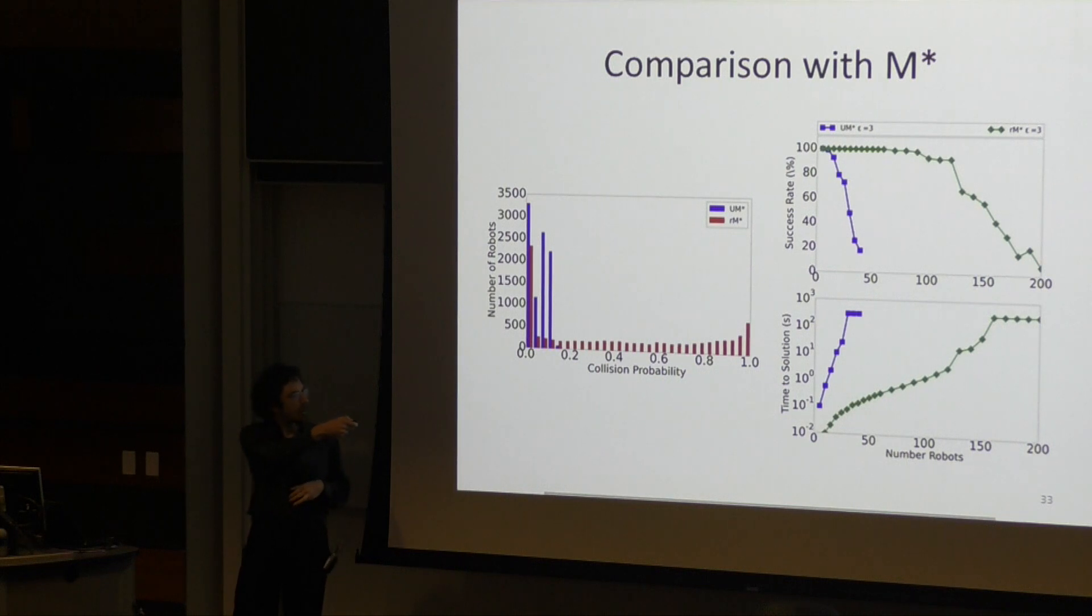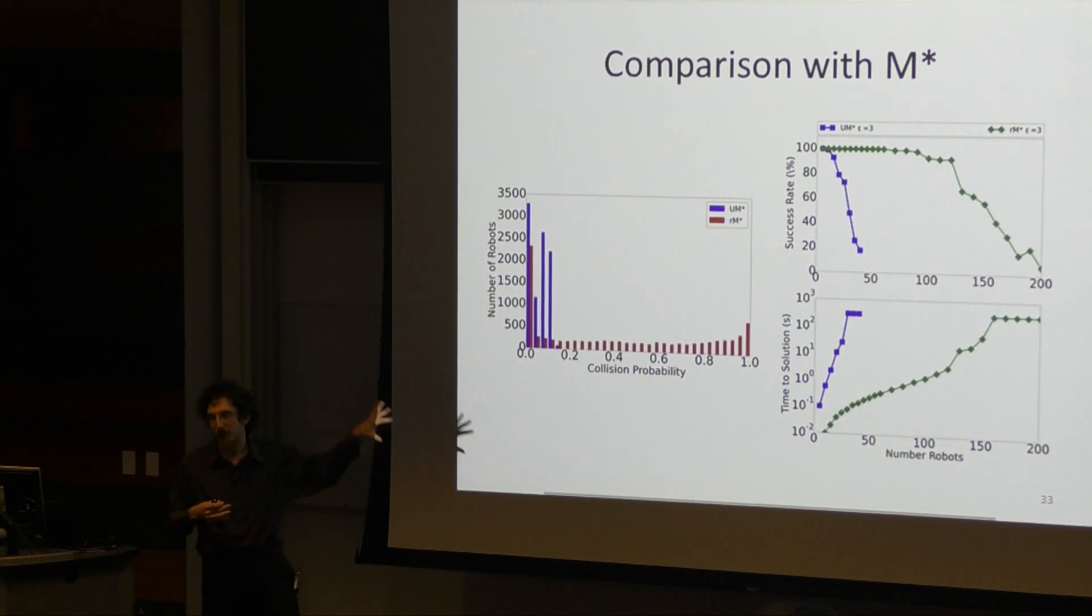Unfortunately, this comes at a cost. On your right, up top, you can see the probability of UMSTAR in blue and MSTAR in green solving a problem of a given size, using the same sort of environment that we showed earlier just with varying number of robots.